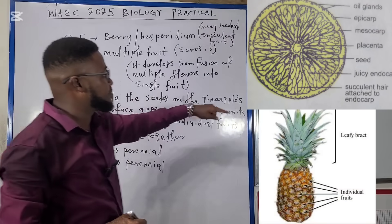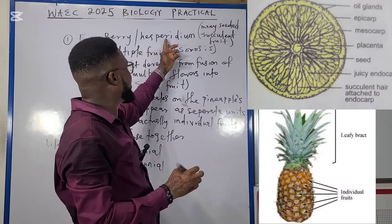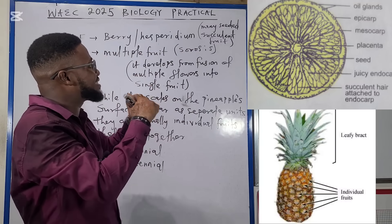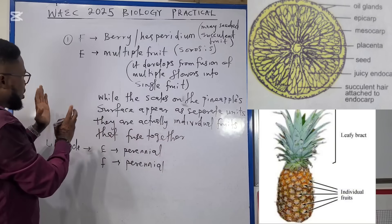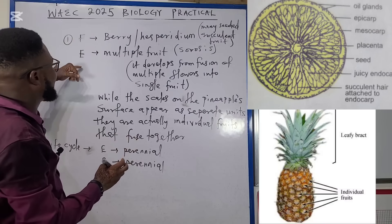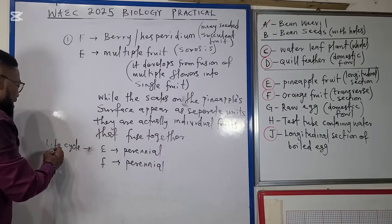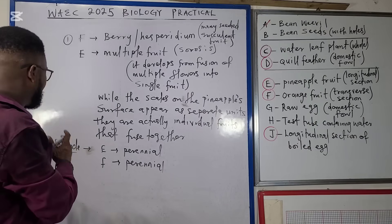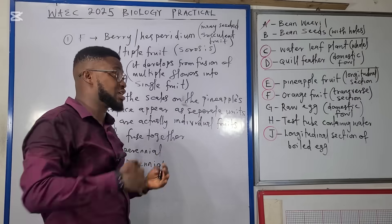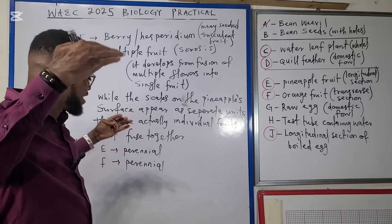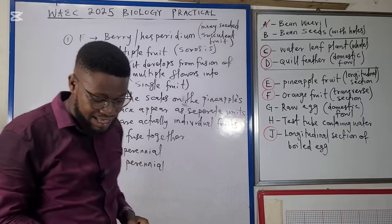Specimen F, the orange fruit, is a berry — more specifically a hesperidium — meaning many-seeded succulent fruit, as you can see in the diagram on your screen. Talking about the life cycle of specimen E and F, they are both perennial crops: you can have them the first year, the second year, and they could continue to live even more than two years.